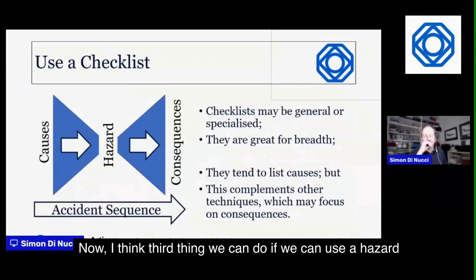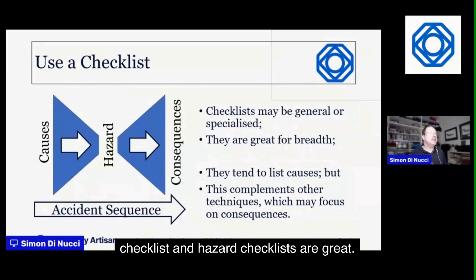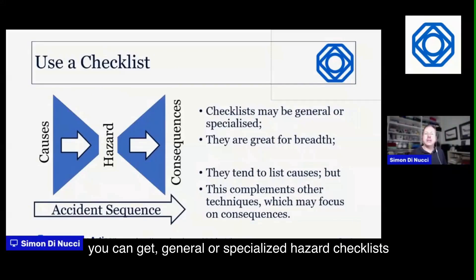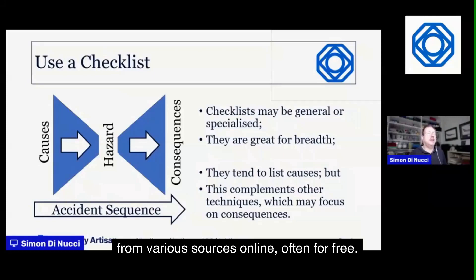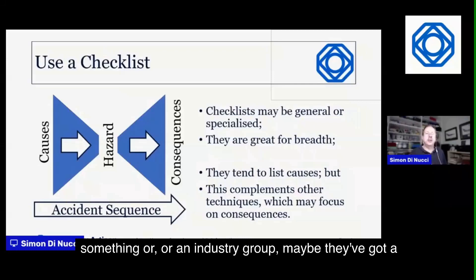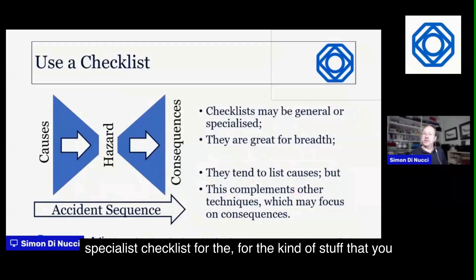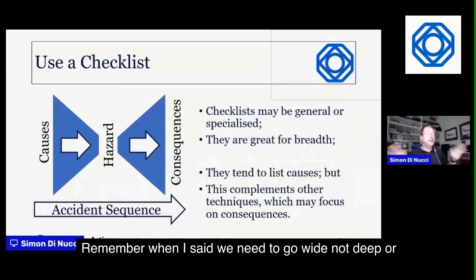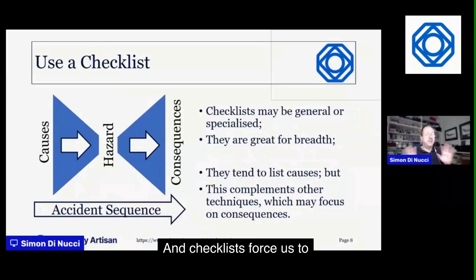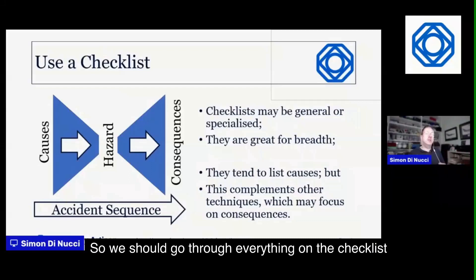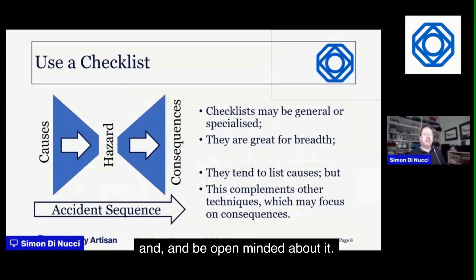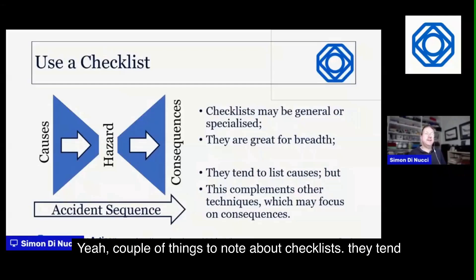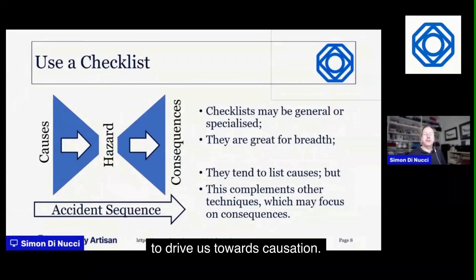Method three: use a hazard checklist. Hazard checklists are great — you can get general or specialized ones from various sources online, often for free. Industry groups or specialist societies may have checklists tailored to your field. Checklists are fantastic for breadth — they force us to consider everything on the list and stay open-minded, giving us the maximum benefit.